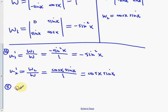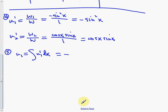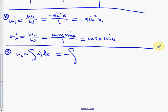Step five: integrate. u₁ = ∫u₁' dx = –∫sin²x dx. To integrate sin²x we need a trig identity — you can't use a simple substitution here because du is not a factor.